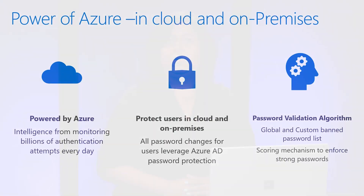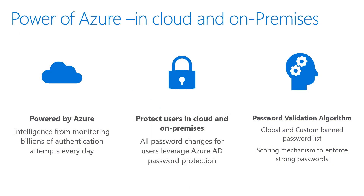To help protect you against targeted attacks, you can also configure your own custom banned password list, which contains words and phrases unique to your organization. These two lists, combined with the banned password algorithm, are then used to generate a password validation score. Every single password change and reset in Azure as well as on-premises is assessed for password strength, and only the strong passwords that are hard to guess are then allowed.